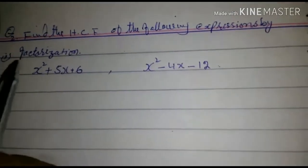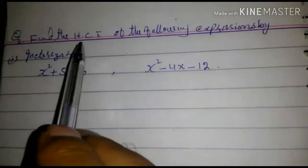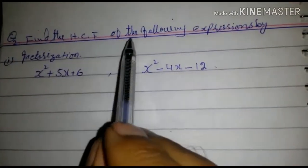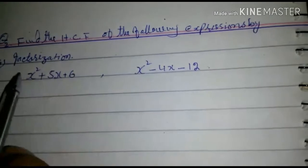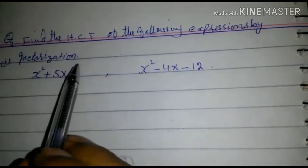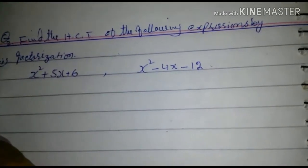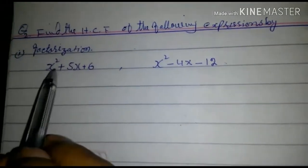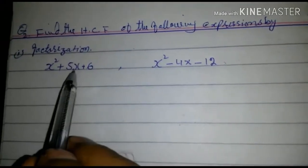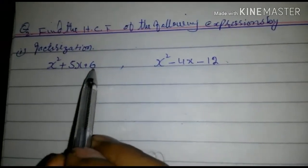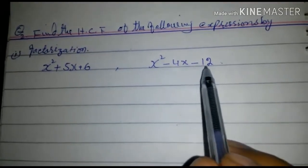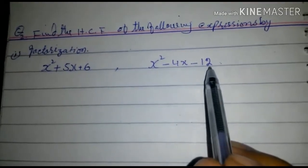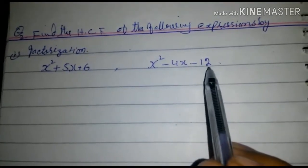Bismillahirrahmanirrahim. Find HCF of the following expressions by factorization. First part: x squared plus 5x plus 6 and x squared minus 4x minus 12 are given.